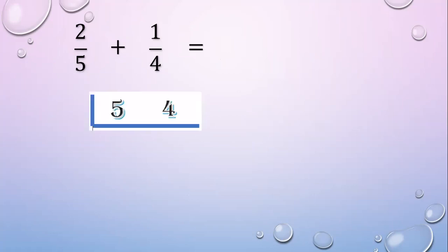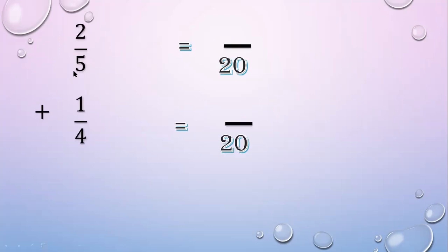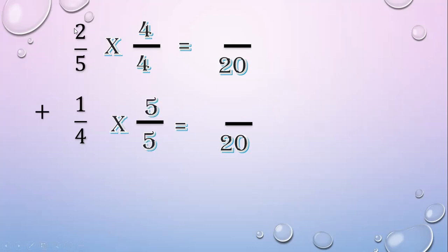Another example. 2 fifths plus 1 fourth. First, get the LCD. 5 and 4 have no common factor, so the LCD is 5 times 4 equals 20. Change the denominator to 20. For 5 to make it 20, we multiply 4. And for 4 to make it 20, we multiply 5. Then 2 times 4 equals 8; 1 times 5 equals 5.